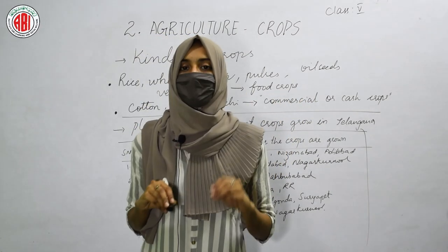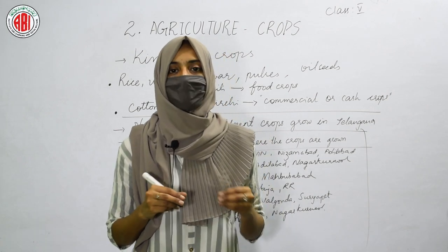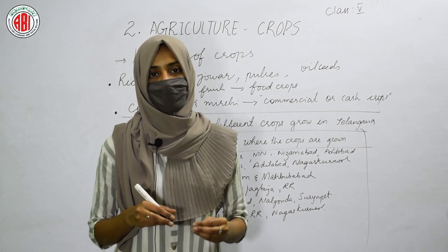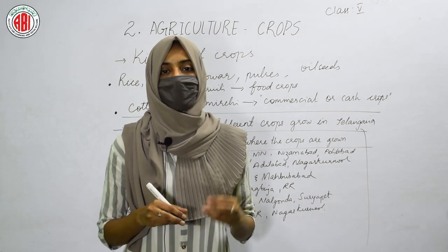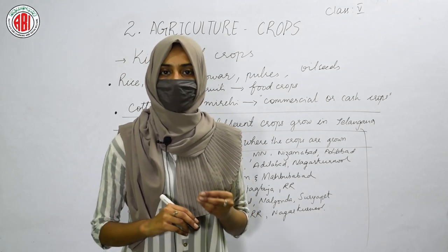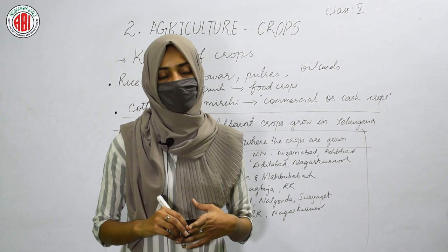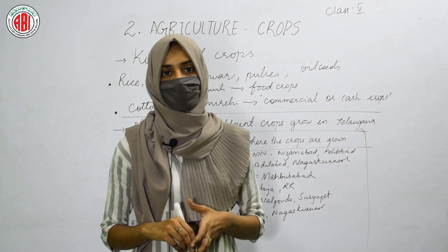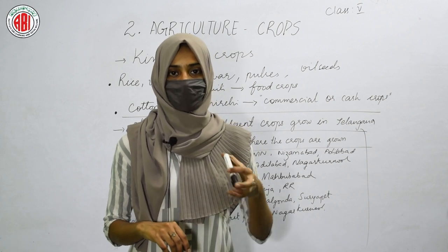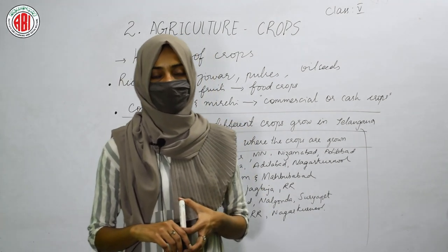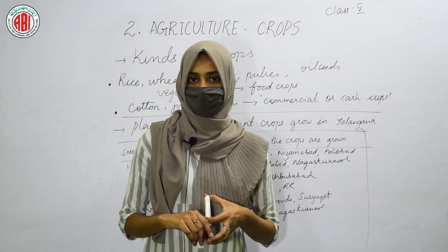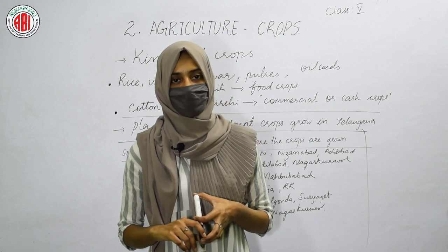Here the lesson on agriculture crops ends. In this lesson we have seen how natural, conventional, and traditional methods help farmers get profit and better crop yield. We also saw agricultural equipment used in different practices, and the different types of crops grown in the various districts of Telangana. I'll be back with a new lesson in the next session. Thank you.